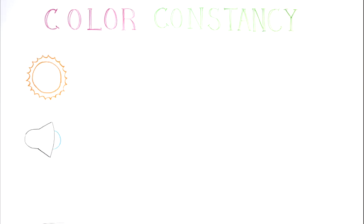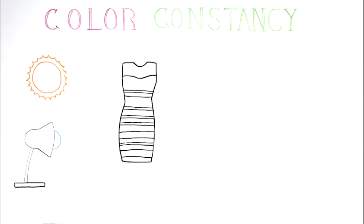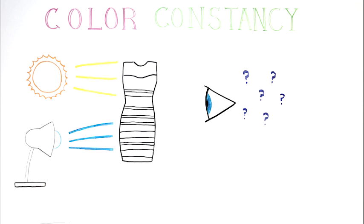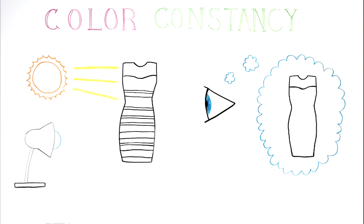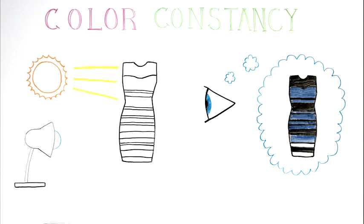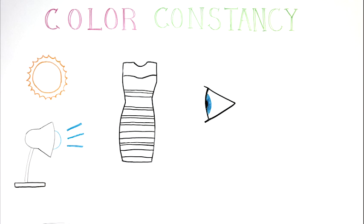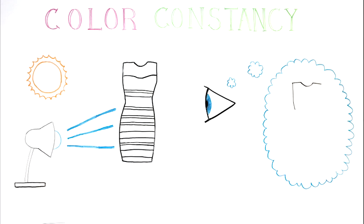An essential factor of color constancy is being able to determine what kind of light is illuminating an object. If we are to perceive the light as natural orange light, then the dress will likely appear to be black and blue. On the other hand, if the lighting is perceived to be artificial blue light, then the dress appears white and gold.